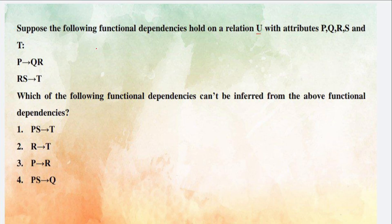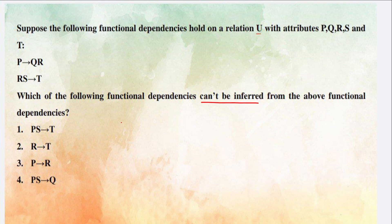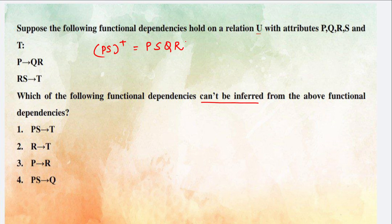The second question: suppose you have relation U with attributes P, Q, R, S, T, and the given functional dependencies are P→QR and RS→T. They are asking which of the following functional dependencies cannot be inferred. For option 1 — PS→T — we find the closure of PS. Starting with {P,S}, P→QR gives us Q and R as well, so closure includes Q and R. Then RS→T applies, giving us T. So PS→T can be inferred.